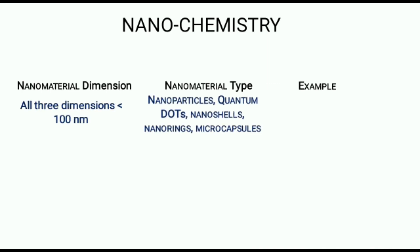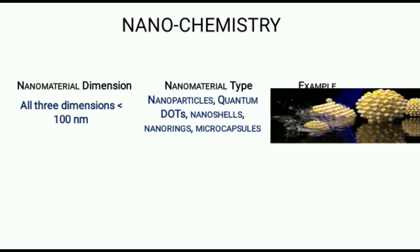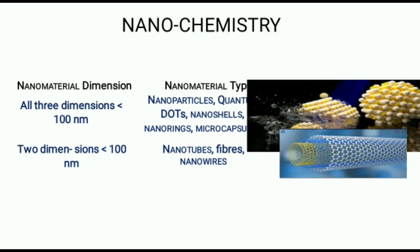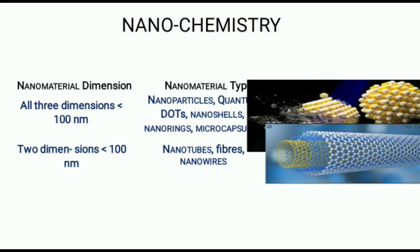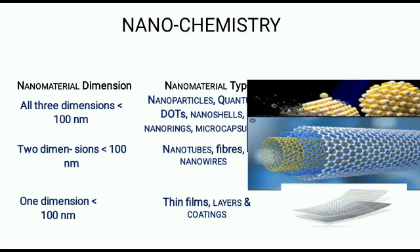When all three dimensions are less than 100 nanometers, examples are nanoparticles, quantum dots, nanocells, and nanorings. When two dimensions are less than 100 nanometers, examples are nanotubes, fibers, nanoparticles, and nanowires. When one dimension is less than 100 nanometers, examples are thin films, layers, or coatings.